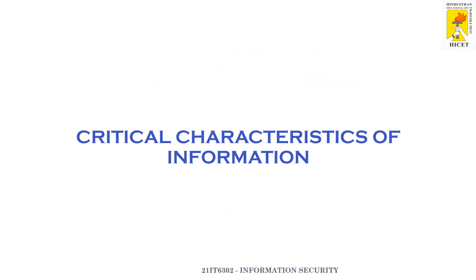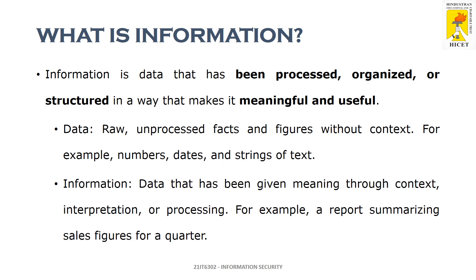Before that, we want to know what is information. Information is data that has been processed, organized, or structured in a way that makes it meaningful and useful. Data is nothing but raw facts and figures without any context — for example, numbers, dates, strings of text. Information is data that has been given meaning through context, interpretation, or processing — for example, a report summarizing sales figures on a quarterly, yearly, or monthly basis.